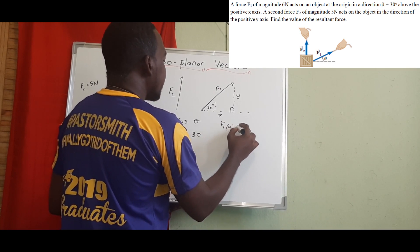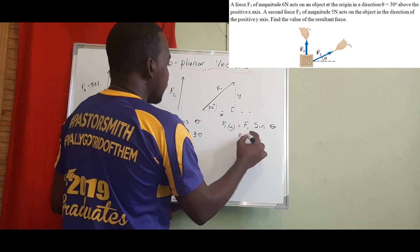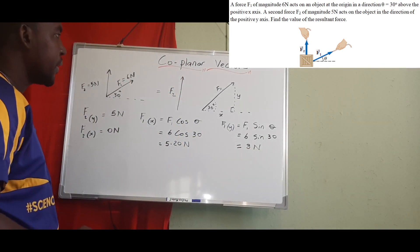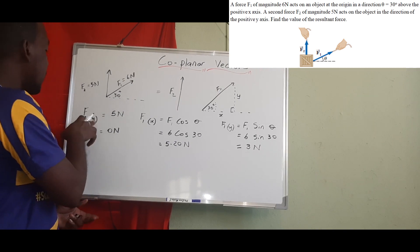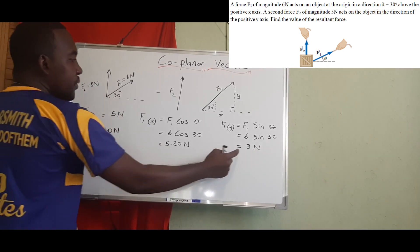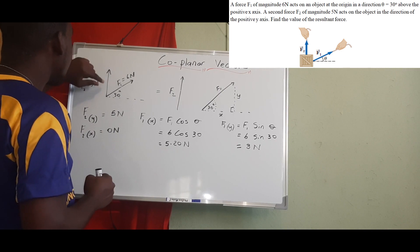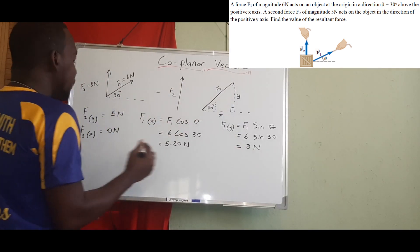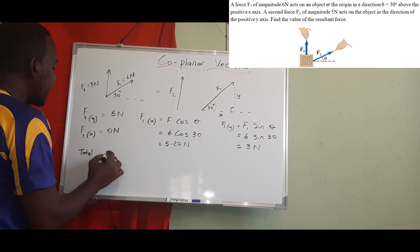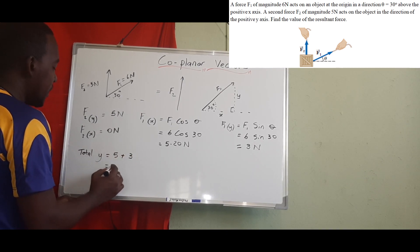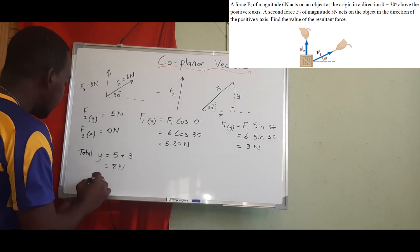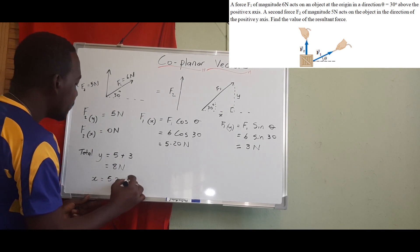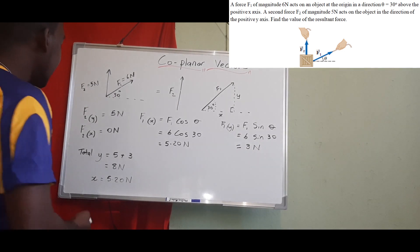F1y = F1 sin θ = 6 sin 30° = 3 newtons. Since we have a y-component from both F1 and F2, and both are directed upward, the total y = 5 + 3 = 8 newtons. The total x = 0 + 5.2 = 5.2 newtons.